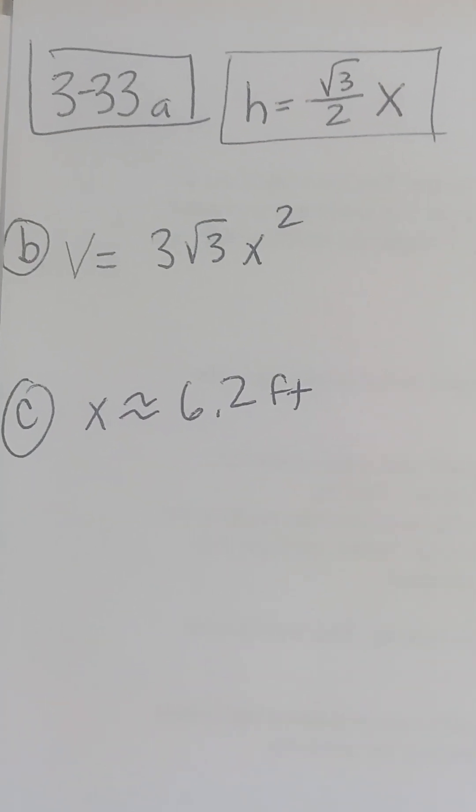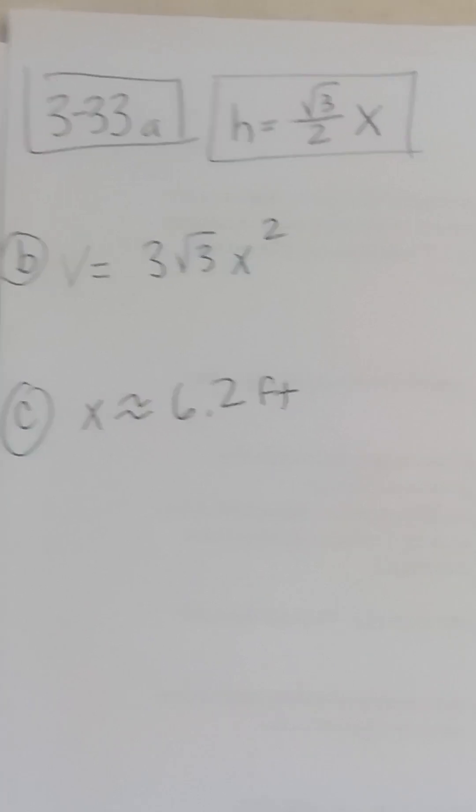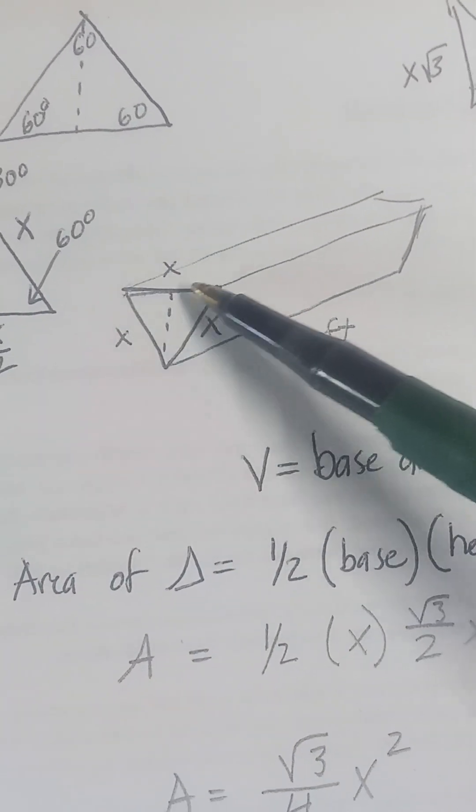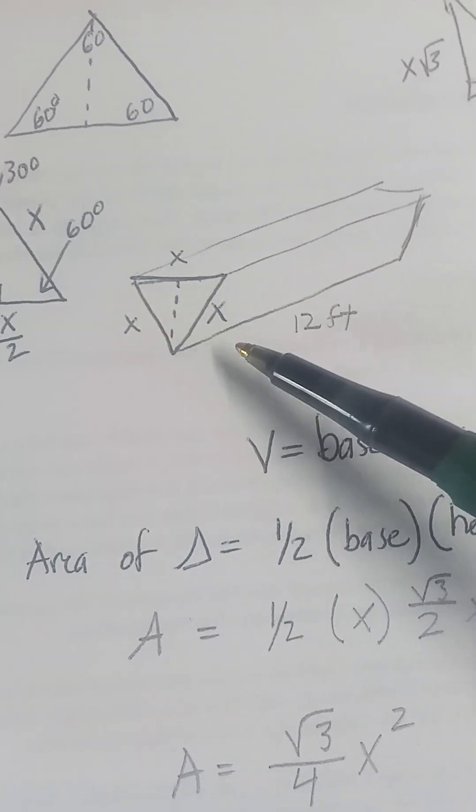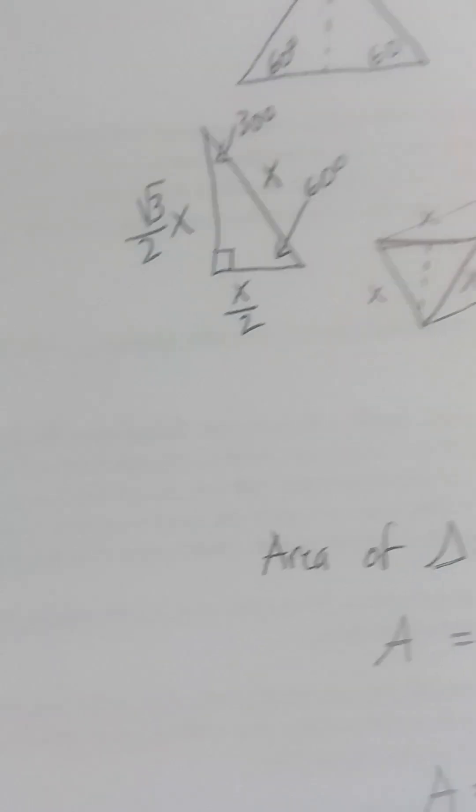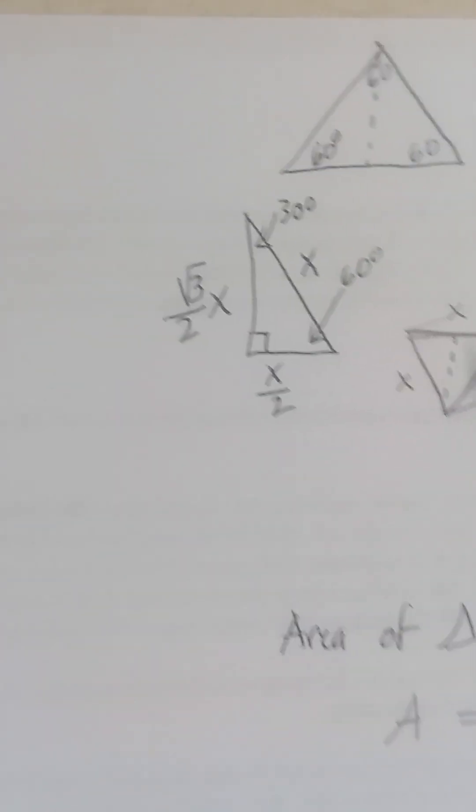Here's pre-calc, problem 3-33, about the volume of a trough. The trough has an equilateral triangle cross-section, it's 12 feet long, and we need to find the height of the triangle.